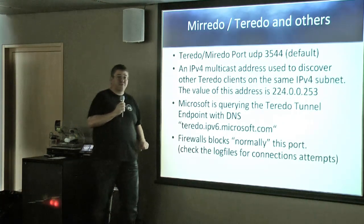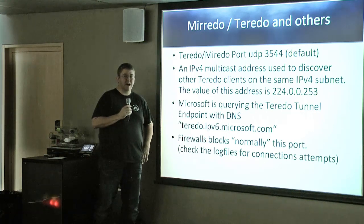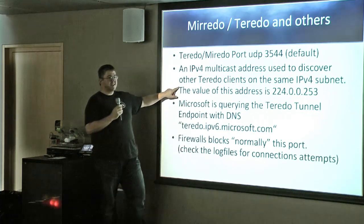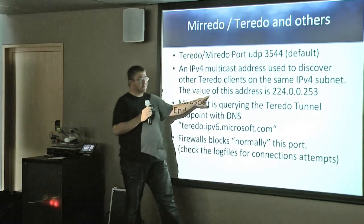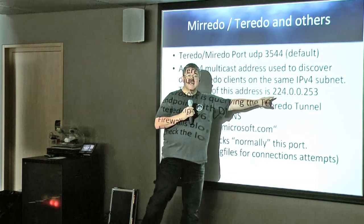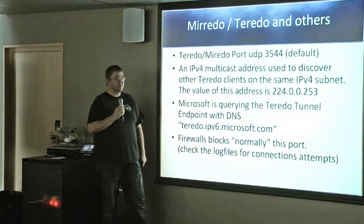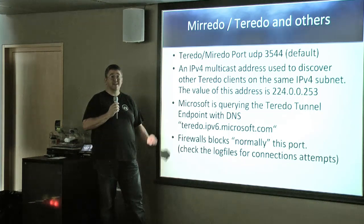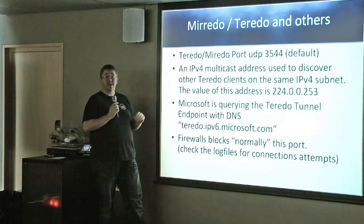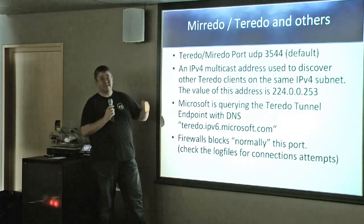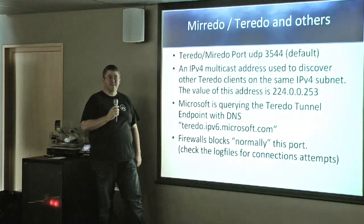Also, if one client in your network has an IPv6 connection to the outside, an auto-tunneling mechanism causes it to announce this to the local network. All other clients see the announcement and try to route their IPv6 traffic over that client's tunnel to the internet — which you may be able to exploit locally.